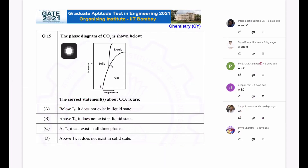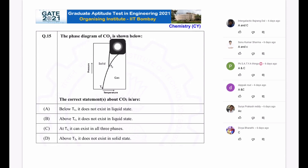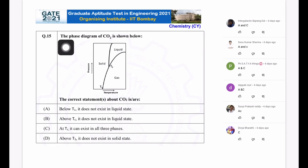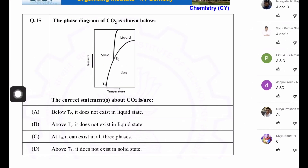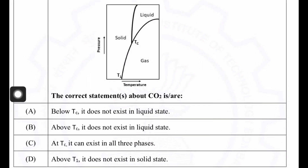Hello everyone, let's discuss this problem. This problem is based on the phase diagram of CO2 and has been asked in GATE 2021 Chemistry. The question shows the phase diagram — a pressure versus temperature plot. Let me zoom in. We have to select the correct statements about CO2.